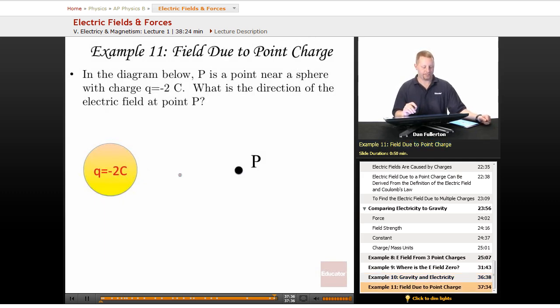All right, last problem here. In the diagram below, P is a point near a sphere that has a charge of negative two coulombs. What's the direction of the electric field at point P?